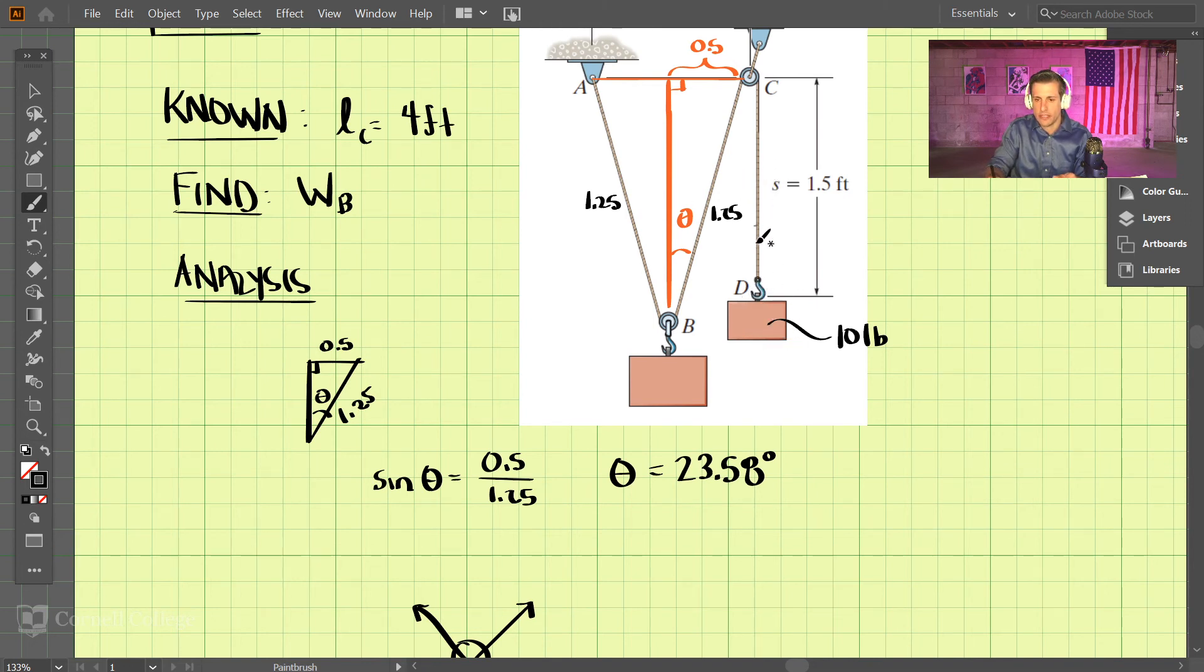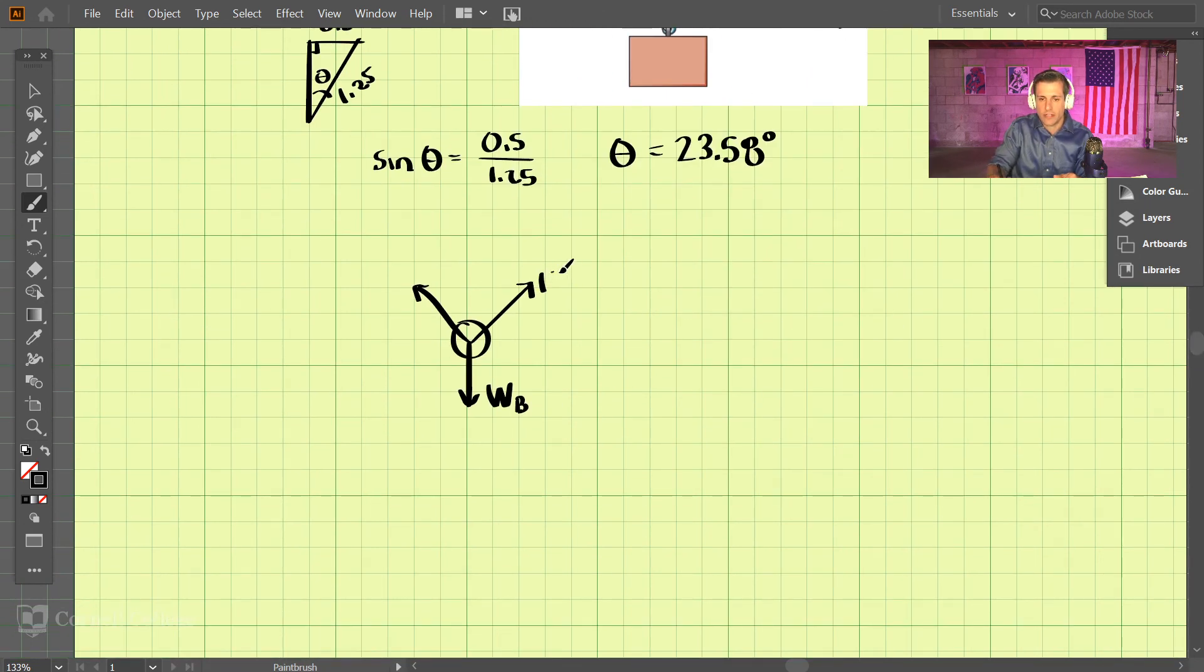So the cable tension, if this is static equilibrium, must be 10 pounds. So we have 10 pounds here, and 10 pounds here. And then we also know what this angle is, theta of 23.58.